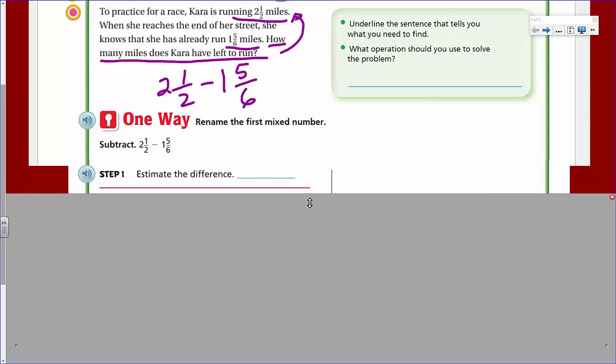So, 2 1/2 minus 1 5/6. And the first thing it says is to rename the first mixed number. But step one also says, estimate the difference. And it's really, really a good practice to do an estimate even before you start any problem. It gives you an idea.